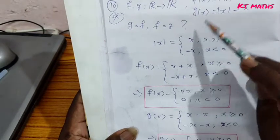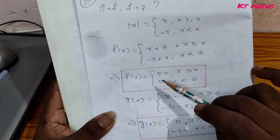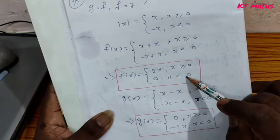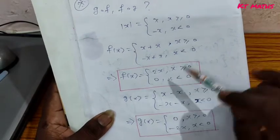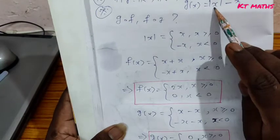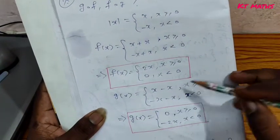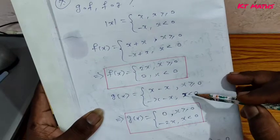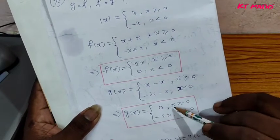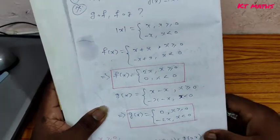When x less than 0: mod x is minus x, so f of x equal to minus x plus x equal to 0. When x greater than or equal to 0: f of x equal to 2x. Similarly, g of x equal to 0 when x greater than or equal to 0, and minus 2x when x less than 0.